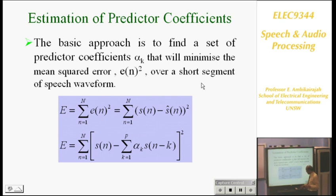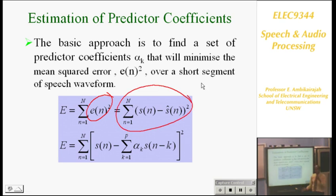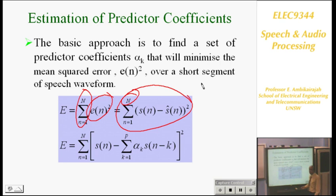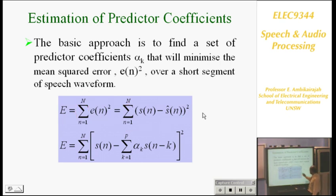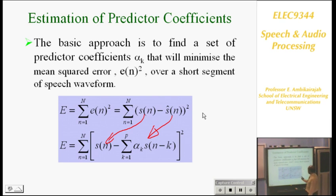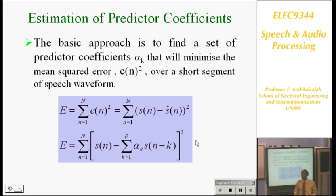Remember, we had E(n) squared — that's for one sample. But you've got a frame, so you have to add all the energy: the total error energy E = sum of E(n) squared over all N values in the frame. To calculate alpha_k, you differentiate this E with respect to alpha_1, alpha_2, alpha_3 up to alpha_P. In our case P is 12, so we get 12 equations.